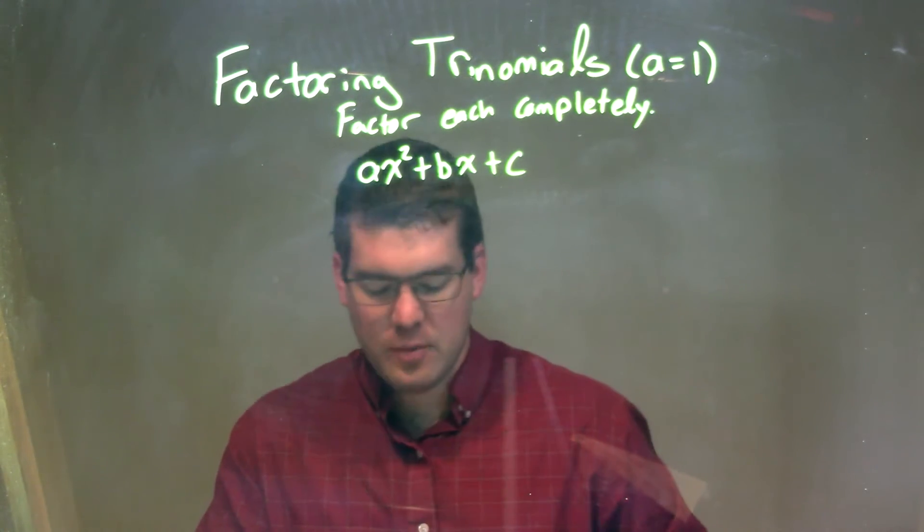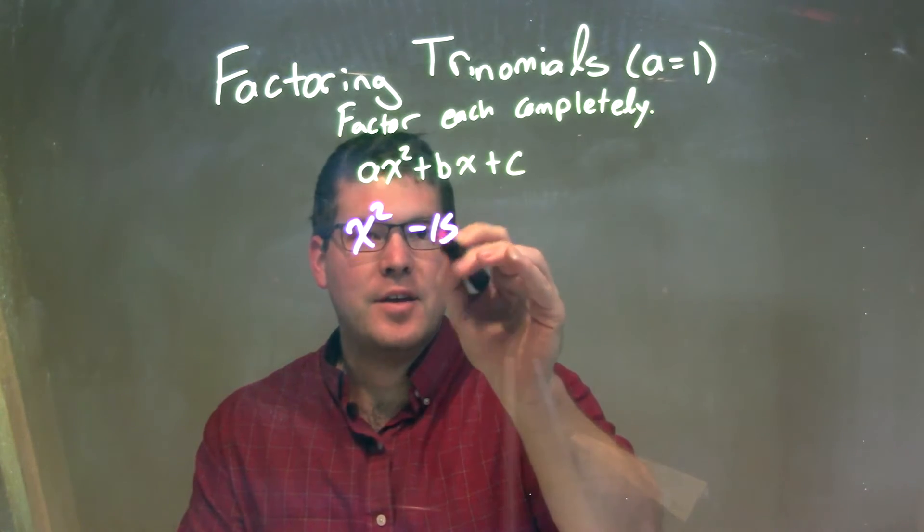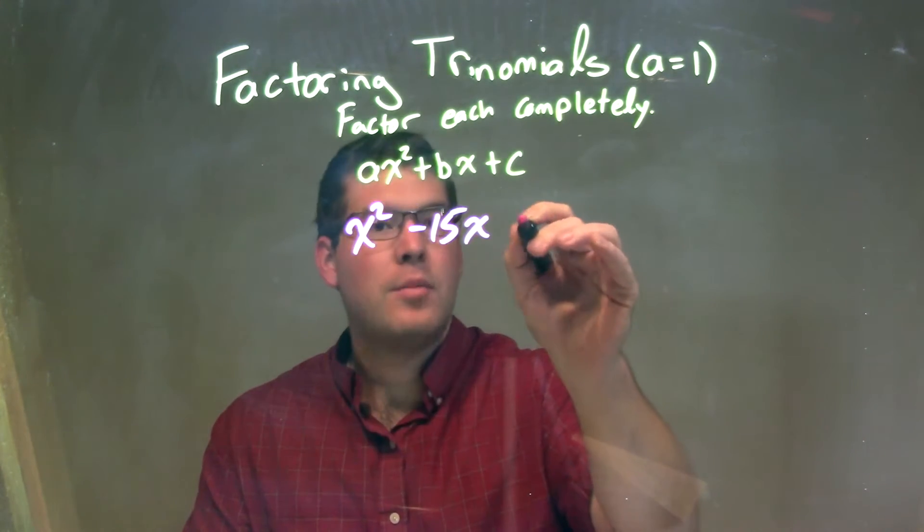So if I was given this trinomial, x squared minus 15x plus 50.